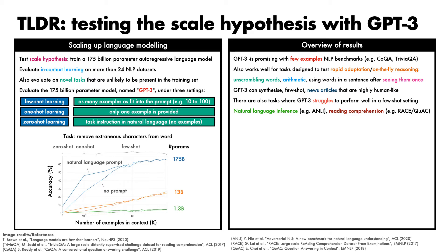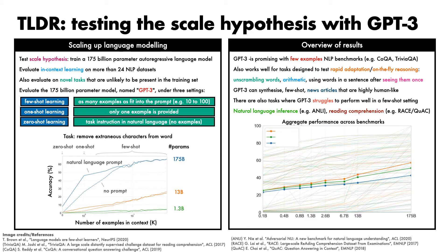To get a broad heuristic sense of how various models perform, we can plot aggregate performance across the 42 tasks studied that measure accuracy, with the number of language model parameters on the x-axis and accuracy on the y-axis. Here, blue denotes zero-shot performance, green is one-shot, and orange is few-shot. We can see that zero-shot performance in blue improves steadily with model size, but that few-shot performance grows faster, suggesting that larger models may indeed be more proficient at in-context learning.